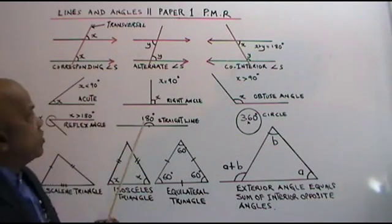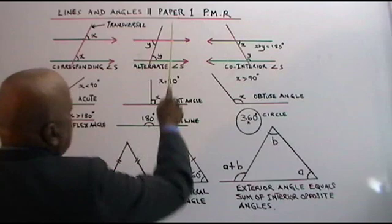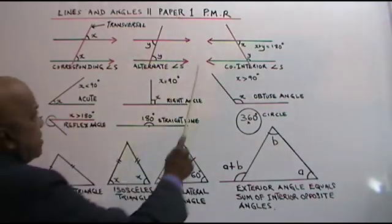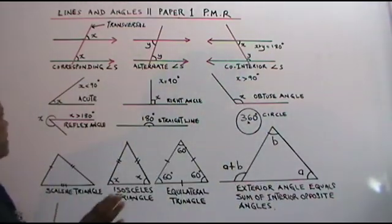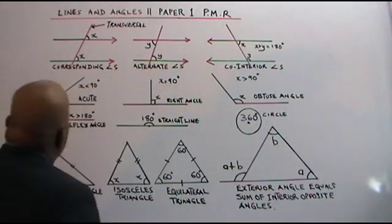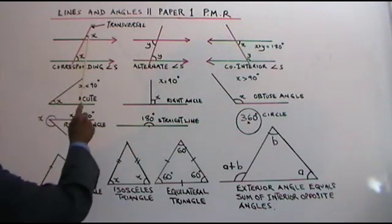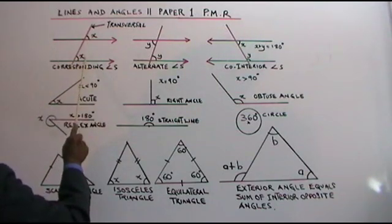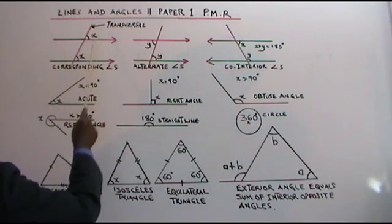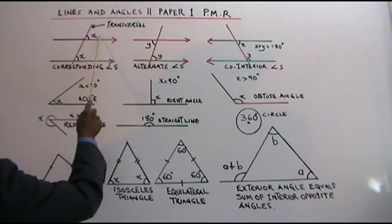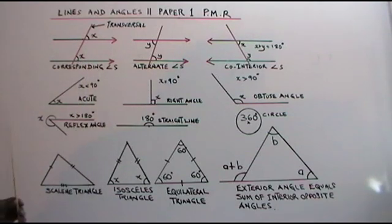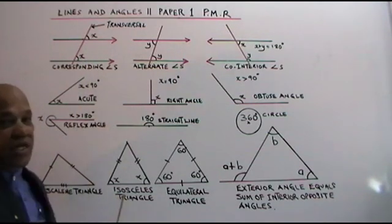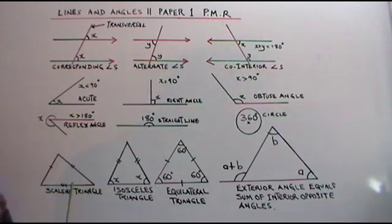So you have here parallel lines and a transversal. Now, this angle and this angle are equal. If this is 20 degrees, this is 20 degrees, and so on. So these are known as corresponding angles.